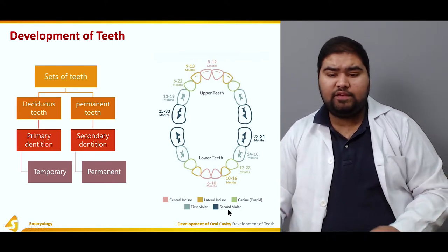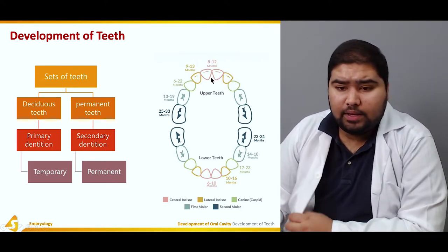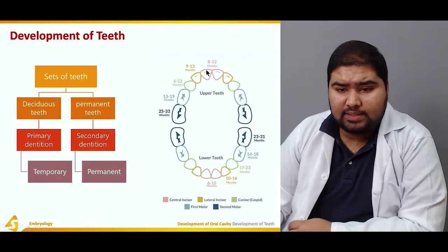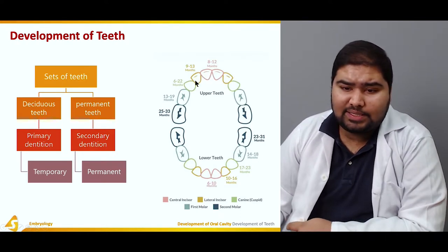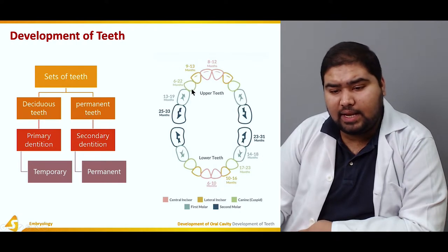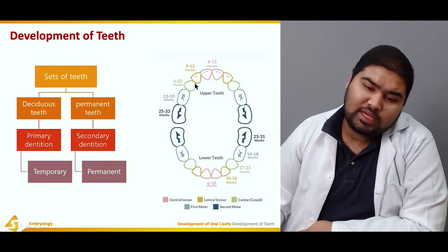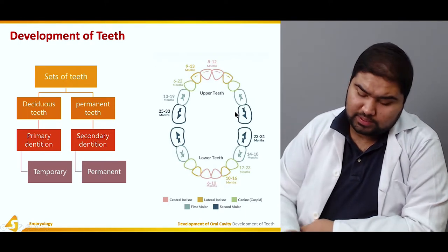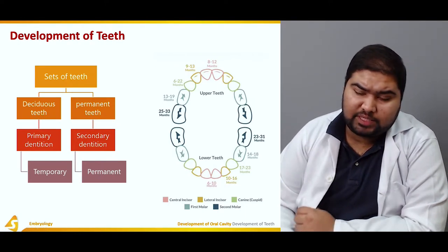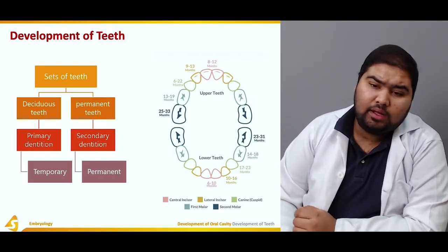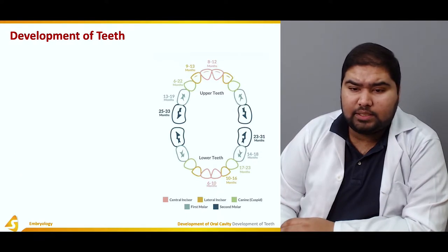In the figure, you can see this is the central incisor, this is the lateral incisor, this is the canine, this is the first molar, and this is the second molar. These are the milk teeth or the deciduous teeth which are temporary and are exchanged with the permanent teeth.